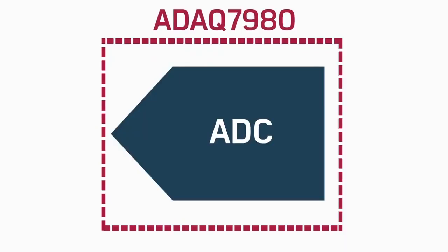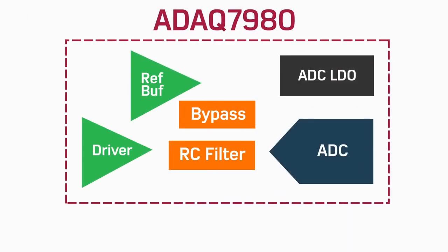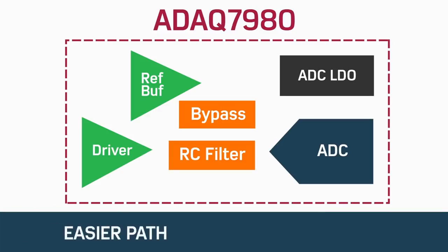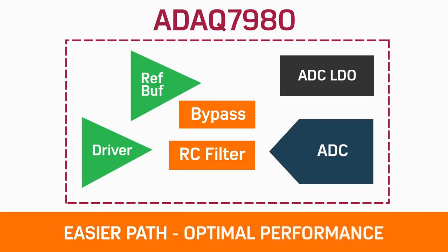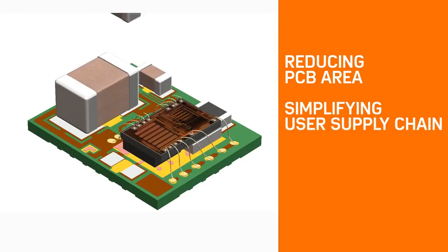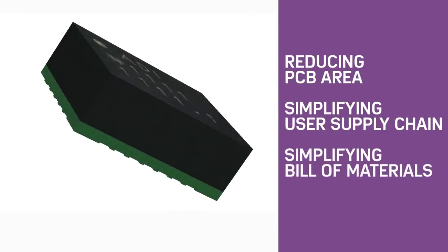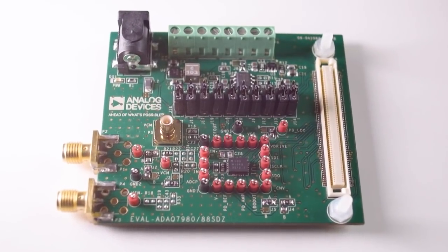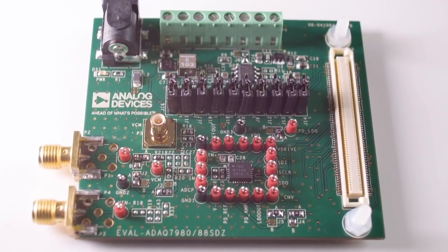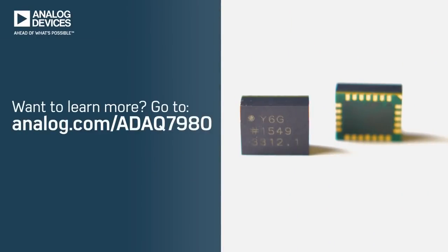With this new style of component including more of a data acquisition signal chain, the ADAQ7980 provides an easier path to achieving optimal performance, all while reducing PCB area, simplifying the user's supply chain, and simplifying the bill of materials. ADI also provides a full suite of design resources intended to help guide the user during the design journey, providing an easier path to design success. For more information, visit analog.com/ADAQ7980.